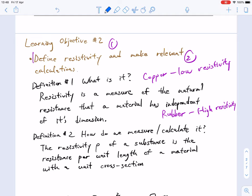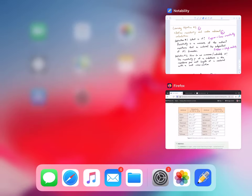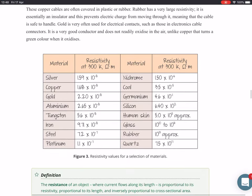Next, we're going to look at resistivity. There are two sub-learning objectives: the definition of resistivity and how it's relevant for calculations. Resistivity is the natural tendency of the material itself, independent of its size or dimension, to resist current flow. A good conductor like copper has very low resistivity, whereas objects like rubber have very high resistivity. Something like quartz has extremely high resistivity and makes a very good insulator. Silver is actually a better conductor than copper.